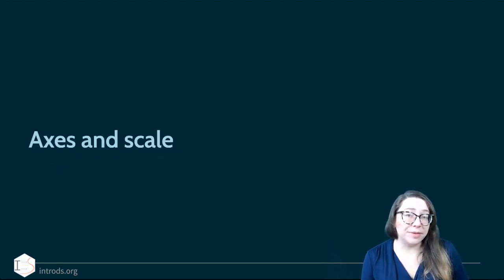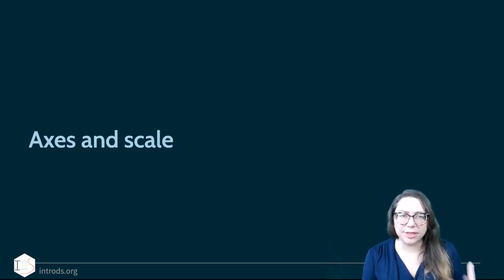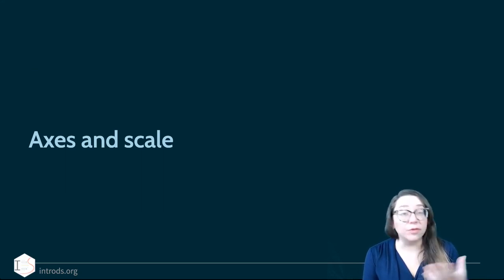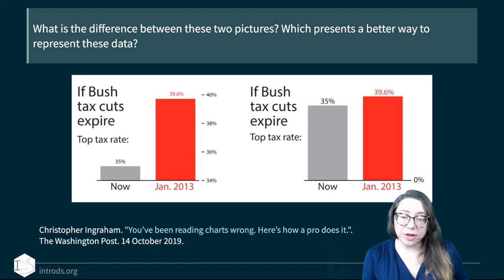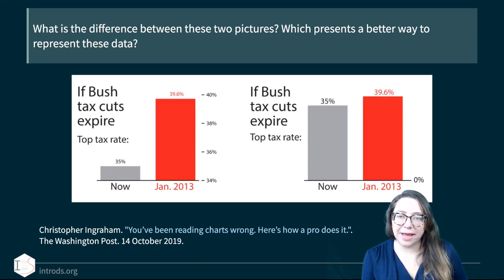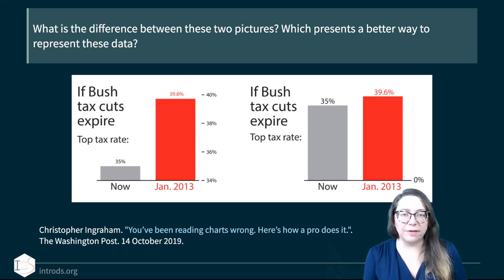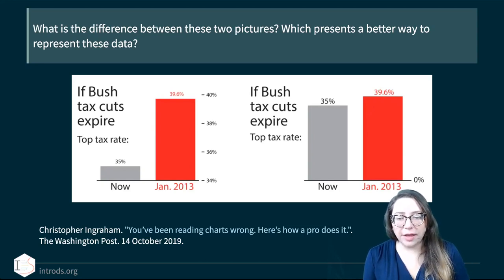Another way misrepresentation happens is in the data visualization stage, which we use very regularly for communicating results and findings, and which media outlets are increasingly using as well. First, let's talk about axes and scale. Looking at this picture from a 2019 Washington Post article: what's the difference between the two images on the left and right, and which presents a better way to represent these data?